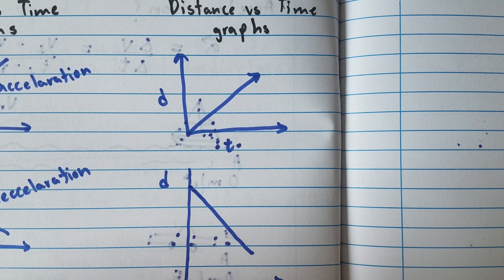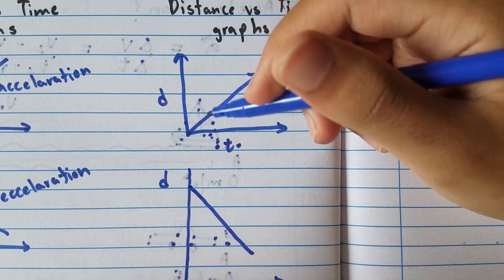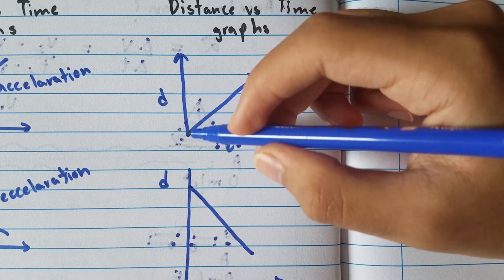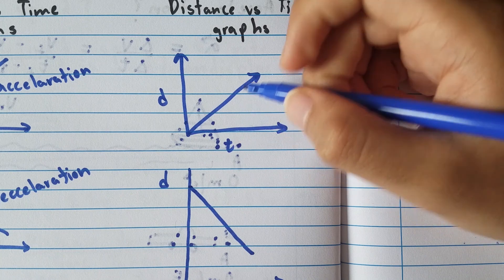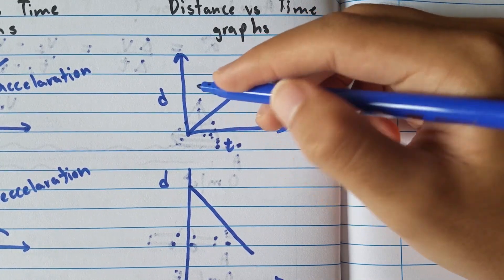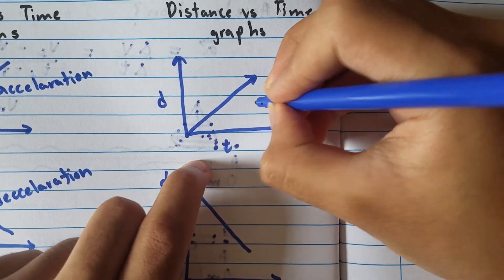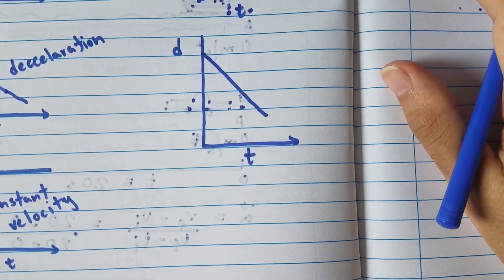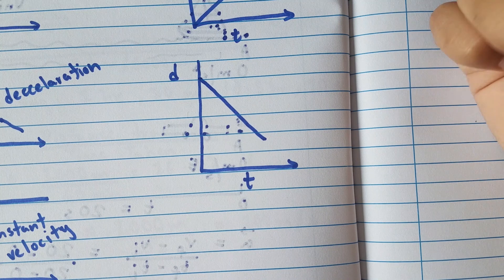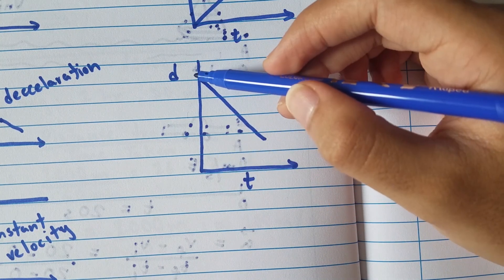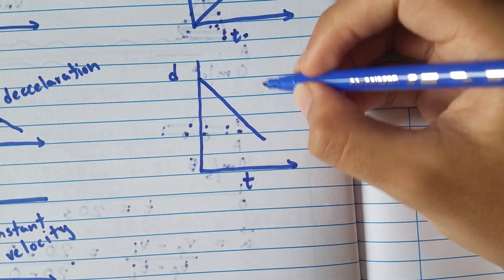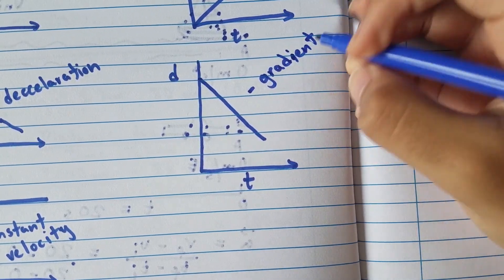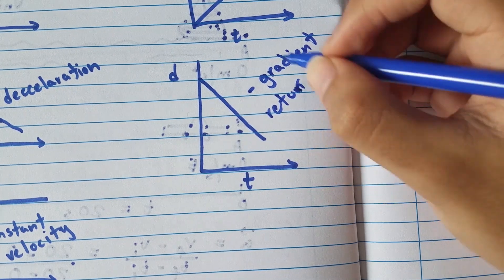Now let's look at some distance-time graphs. Here we have a straight line with a positive slope, meaning for every constant change in time there's a constant change in distance. So this represents constant speed. In the next graph, the line has a negative gradient — for every increase in time there's a decrease in distance. This is also a constant speed, but it represents a return journey because the gradient is negative.